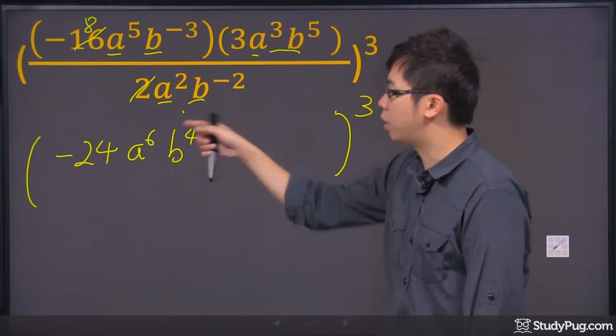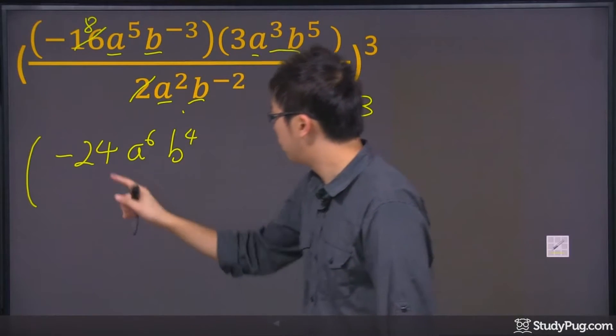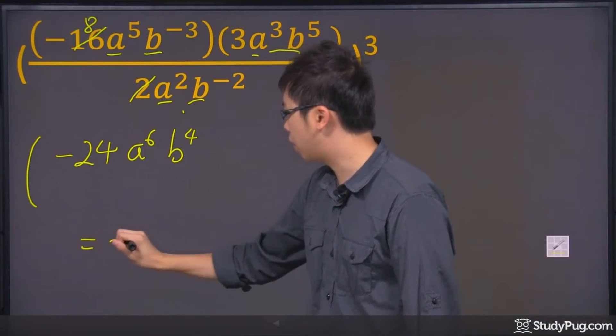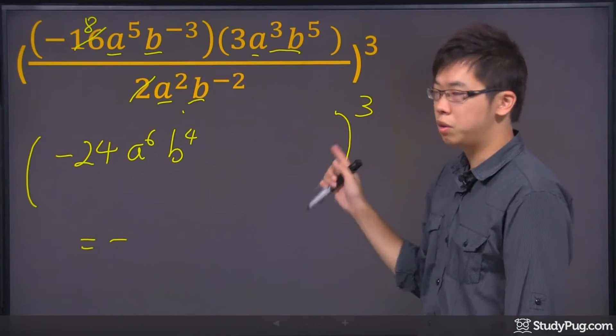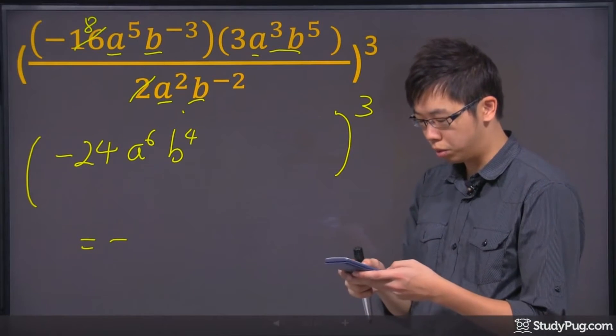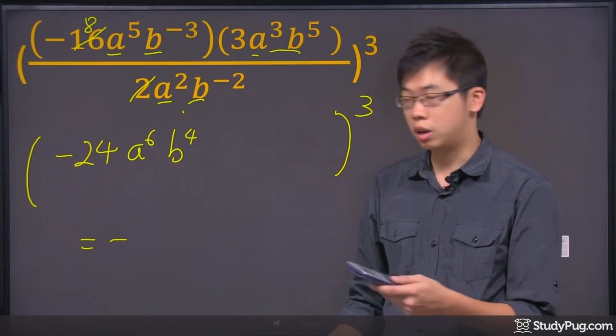So the power of 3 just multiplies to everything. So the negative to the power of 3 is still negative. The 24 to the power of 3 is such a big number. We can leave it as it is, or you can just punch it in the calculator.